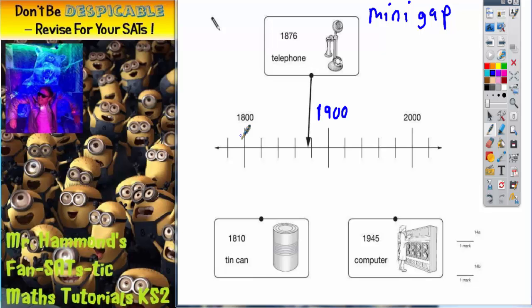Now from 1800 to 1900, that gap is 100 years. But between that 100 years we've got 1, 2, 3, 4, 5 mini-gaps. So if we share that 100 years by 5 mini-gaps, we will find that each mini-gap must be going up in 20 years.